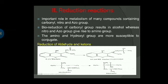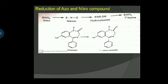For example, warfarin undergoes a reduction reaction to give alcohol diastereomers. Another example is methadone, which undergoes a reduction reaction. Next is reduction of azo and nitro compounds. Nitro compound undergoes reduction to nitroso. Nitroso compound undergoes reduction to become hydroxylamine. Hydroxylamine undergoes further reduction to give a primary amine. For example, nitrazepam undergoes reduction to become the 7-amino metabolite.